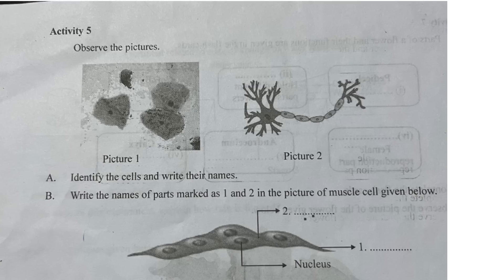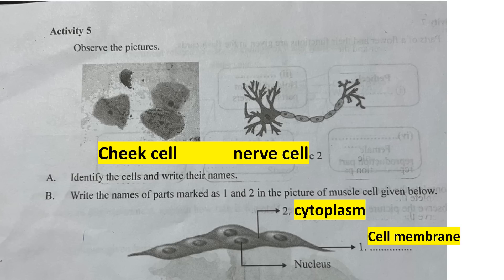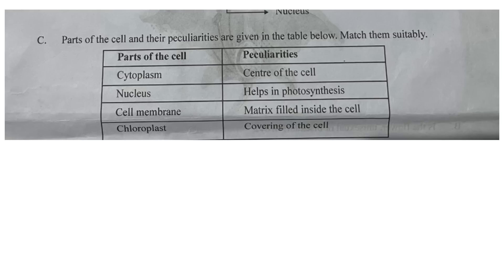Activity 5: Observe the pictures. Identify the cells and write their names — cheek cells and nerve cells. Write the names of parts marked as 1 and 2 in the picture of the muscle cells. Number 1 is cell membrane and number 2 is cytoplasm and nucleus.